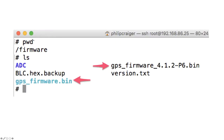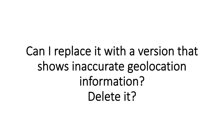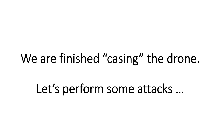Moving to another directory — the firmware directory — we do a directory listing and see files like GPS firmware.bin, which are files associated with the GPS residing on the drone. Thinking like a hacker: could I replace that GPS firmware with a version that shows inaccurate geolocation information? Or what if I deleted that file? This gives you a taste of how a hacker would find out what is on the drone and how they could take advantage of what they find.